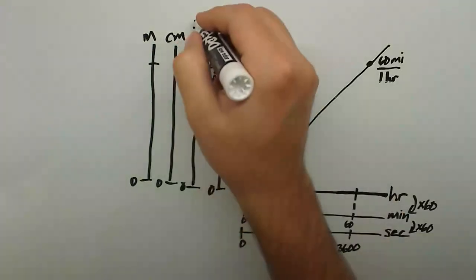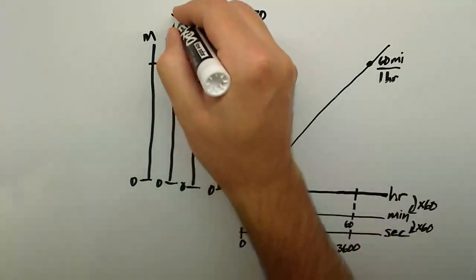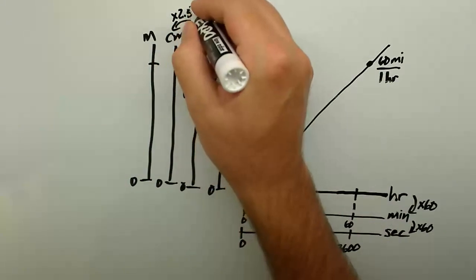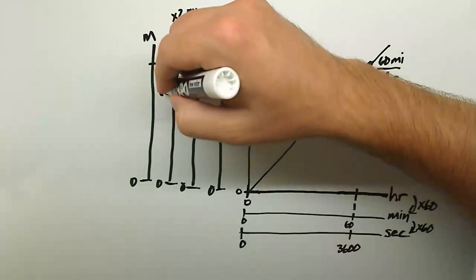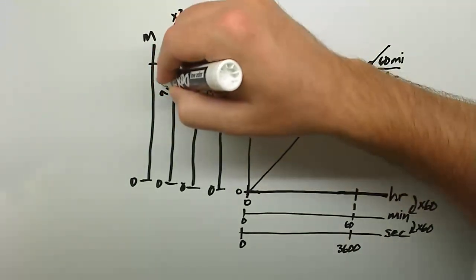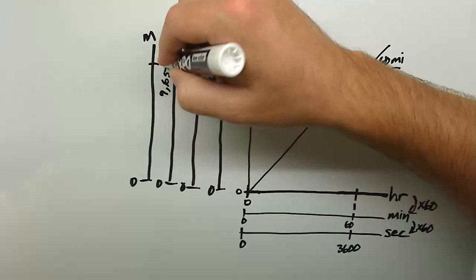Now, because 1 inch is 2.54 centimeters, I multiply 3,801,600 by 2.54 to get 9,656,064 centimeters.